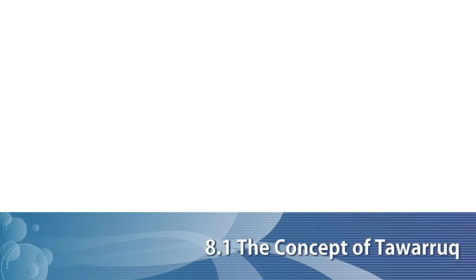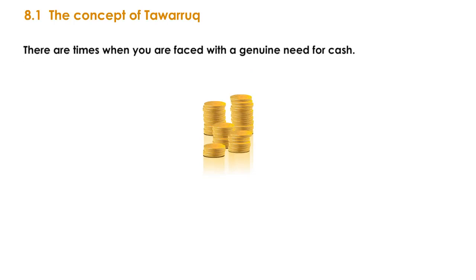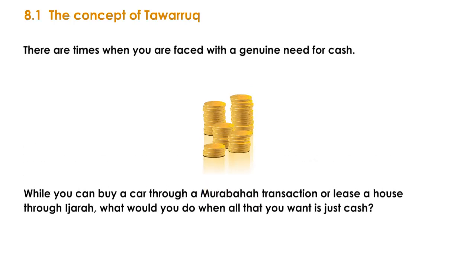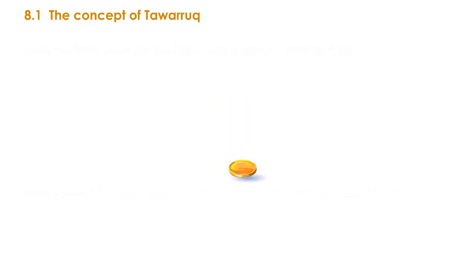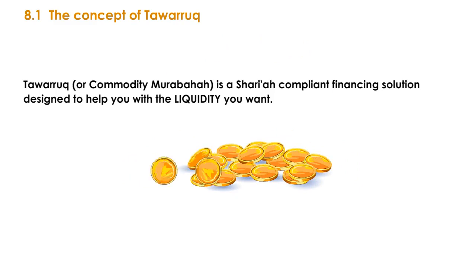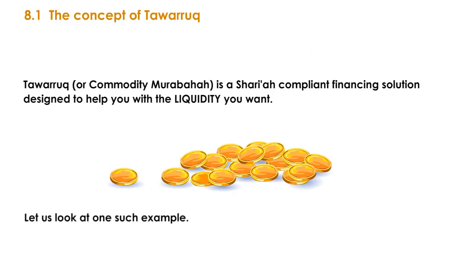The concept of Tawaruk. There are times when you are faced with a genuine need for cash. While you can buy a car through a Murabaha transaction or lease a house through Ijara, what would you do when all that you want is just cash? Tawaruk, or Commodity Murabaha, is a Sharia-compliant financing solution designed to help you with the liquidity you want. Let us look at one such example.